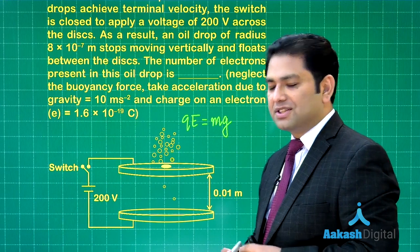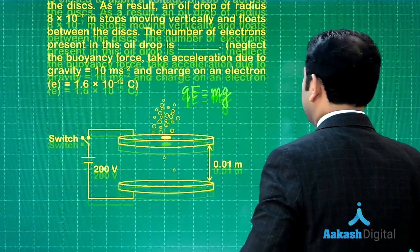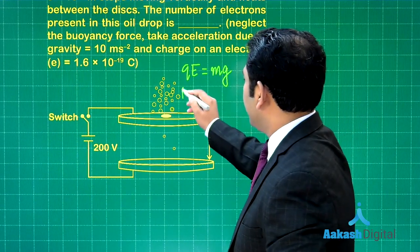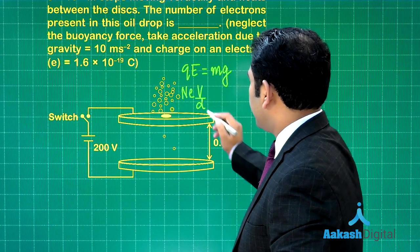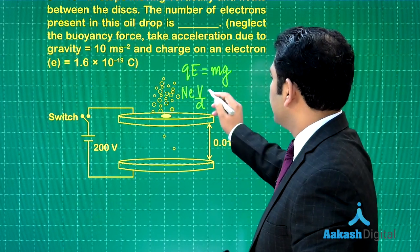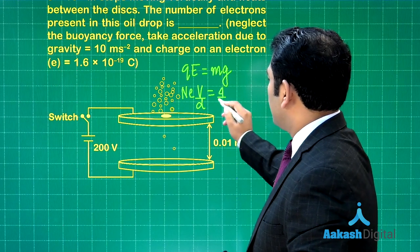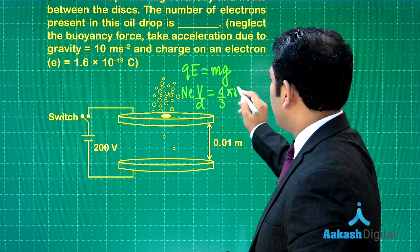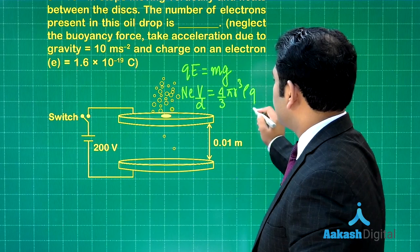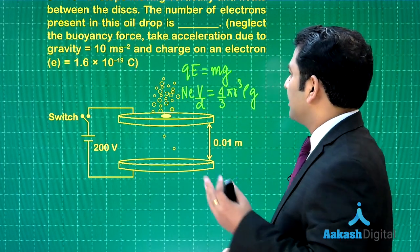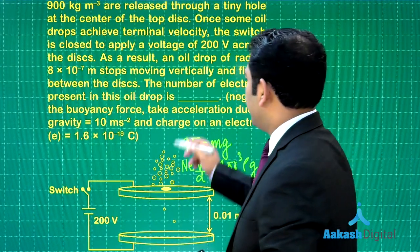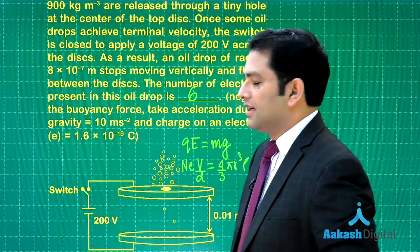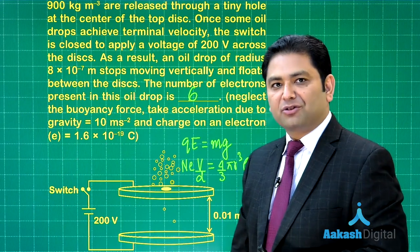If the drop is at rest, it's quite simple: qE equals mg. We need to calculate the number of electrons present in this oil drop. The charge is n times e. Electric field is V/d. Mass is (4/3)πr³ρg. With a little calculation, the value of n comes out to be 6.